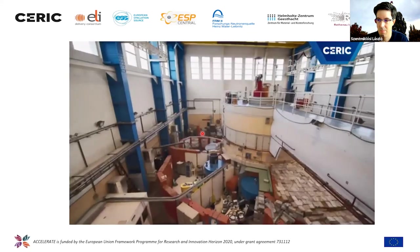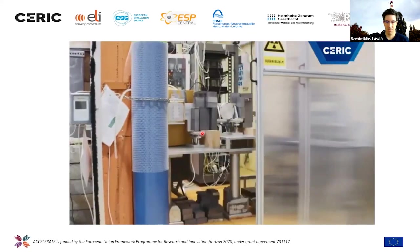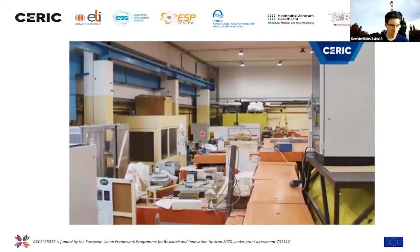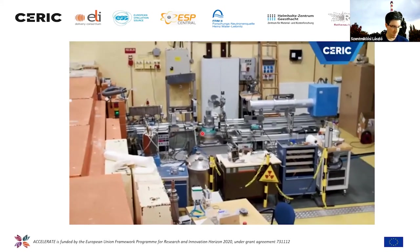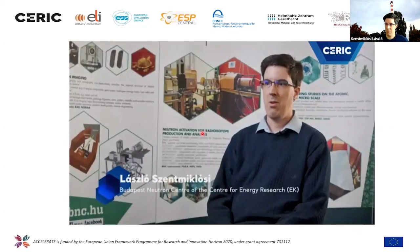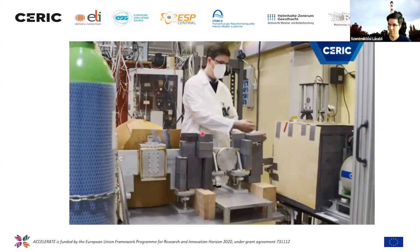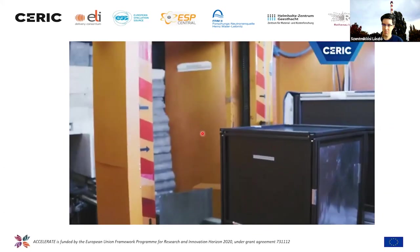Welcome to the experimental hall of the Budapest Neutron Center. It is the most significant research infrastructure in Hungary and a neutron service provider. I will present the two beamline facilities for prompt gamma activation analysis — PGA and NIPS — and the two imaging facilities, RAD and NORMA.